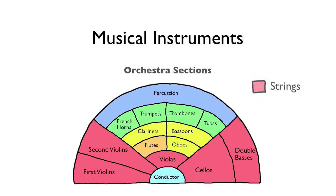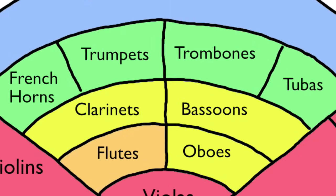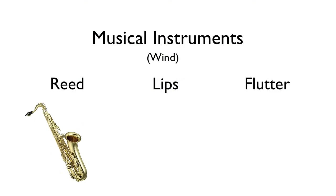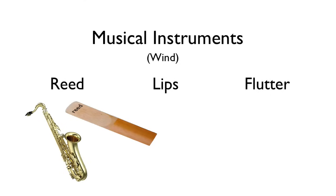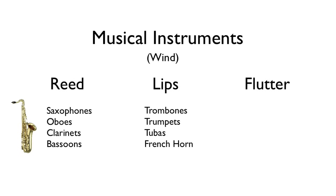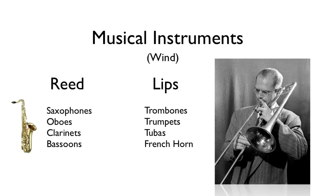There are three types of wind instruments, and they differ by the source of vibration. With a saxophone or clarinet, there's a reed — typically a thin strip of wood — that vibrates close to the player's lips. These are the reed wind instruments. For horns, such as a trombone, it's the player's lips themselves that are the source of vibration.